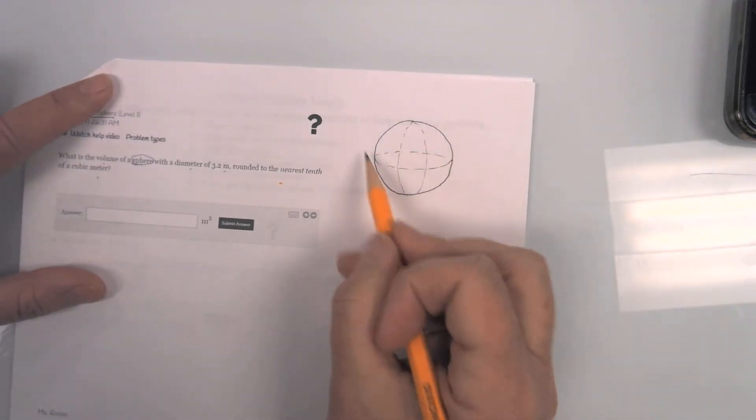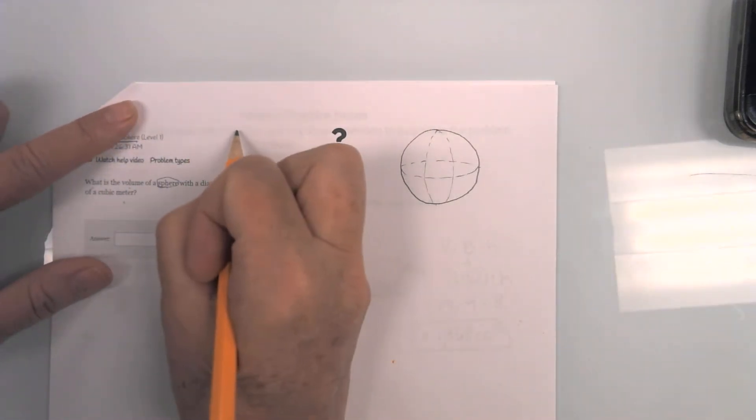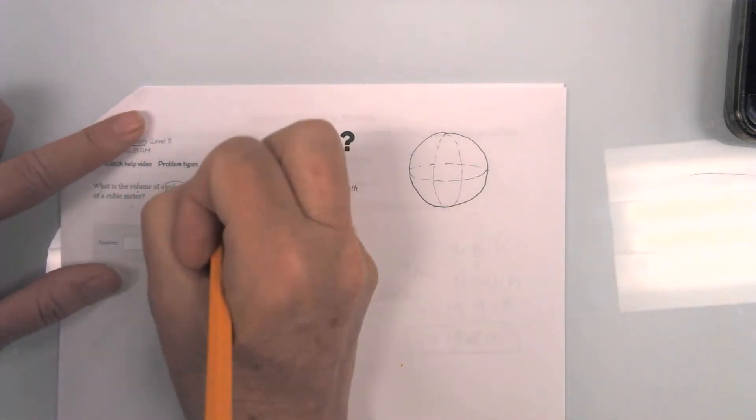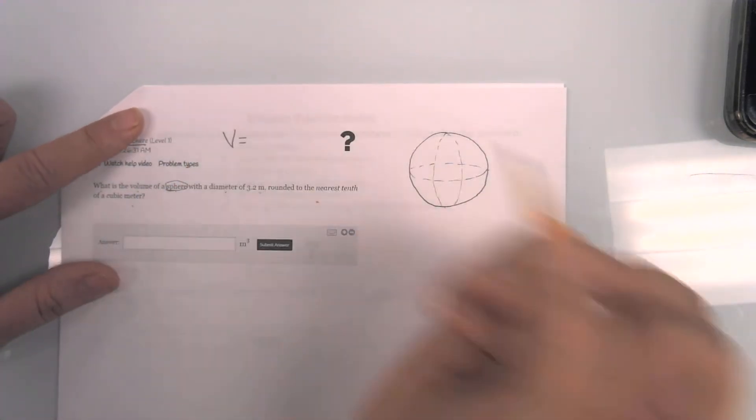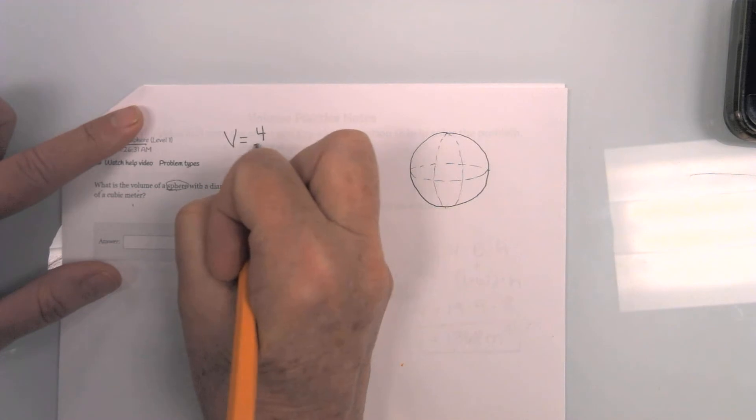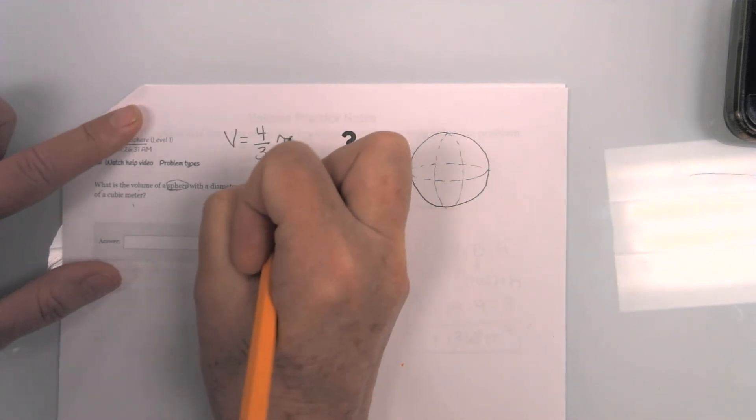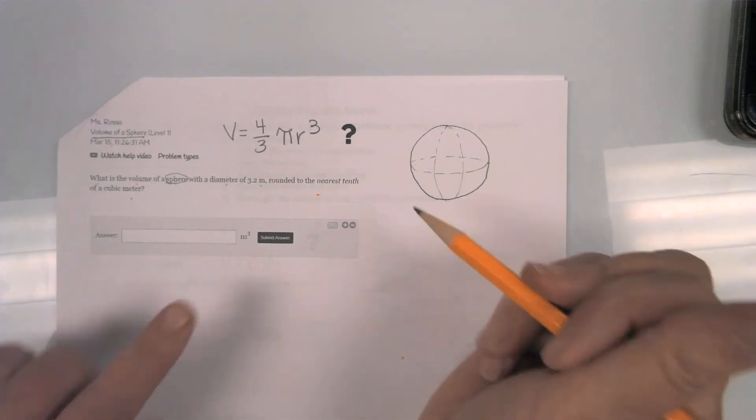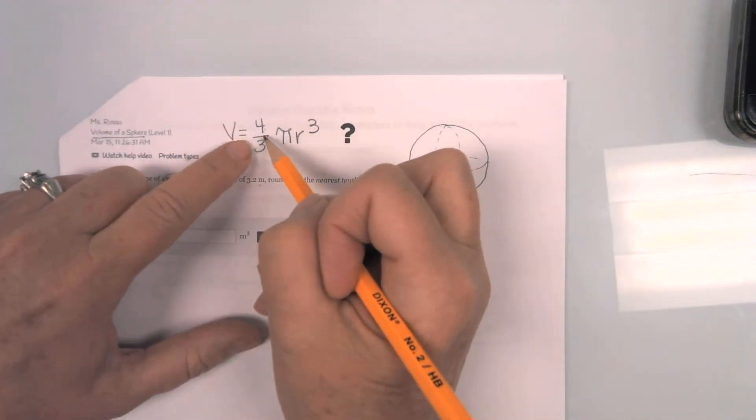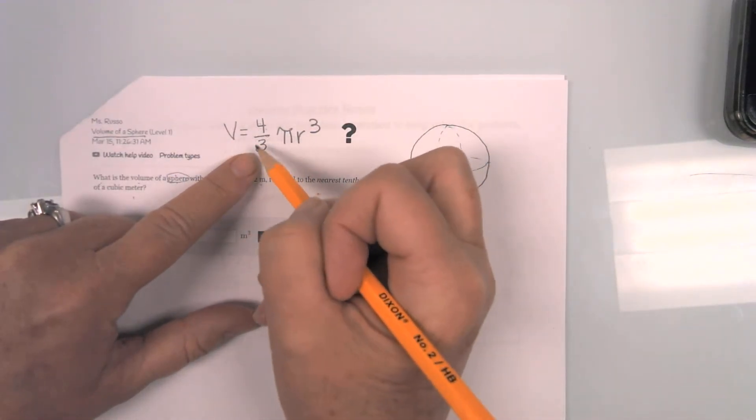Now, in order to do a sphere, our formula is a little bit different. So it is one you just need to recognize. It is four-thirds pi r cubed. Now, I always have to remember that it's four divided by three. It is four-thirds. It is greater than one.